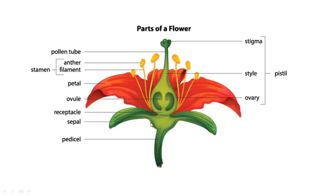So the pedicle. We call the calyx. In the calyx, the individual parts are the sepals. And the receptacle. The receptacle. This is ovule. This is ovary. This ovary is our future fruit. This ovule is seeds.